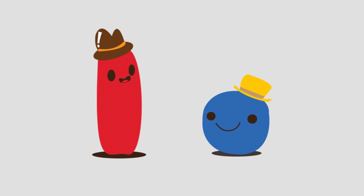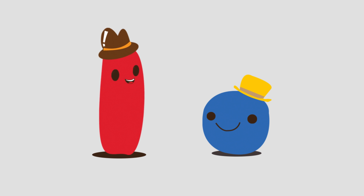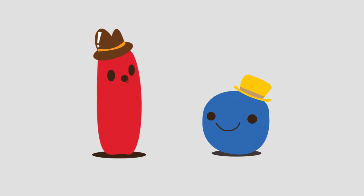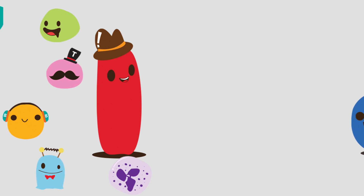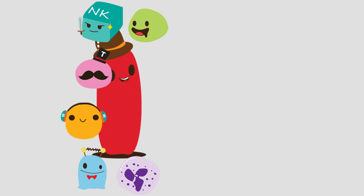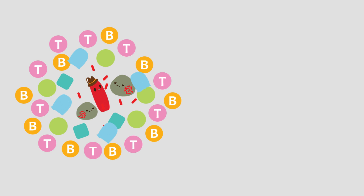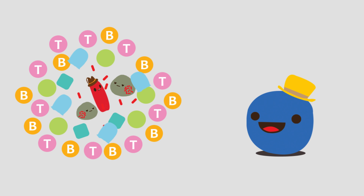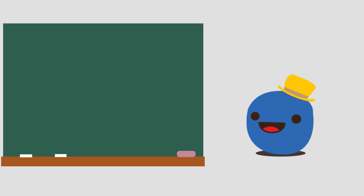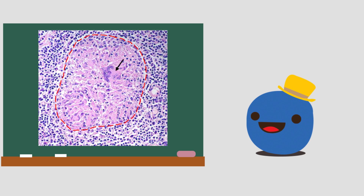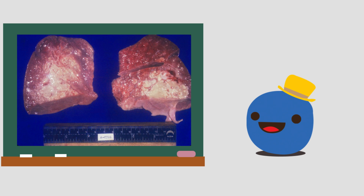The host immune response can induce granuloma formation. Granuloma formation is a process to limit the area of infection and prevent the spreading of MTB to other normal cells. The granuloma is a sign of cell-mediated immune response. MTB induces a typical granuloma called caseous necrosis. This is the picture of granuloma, and this one shows the caseous necrosis.